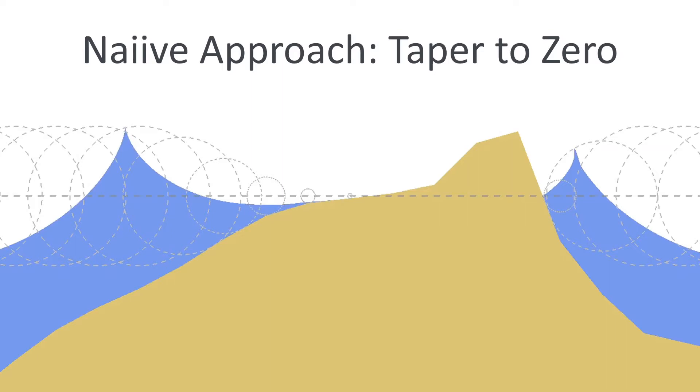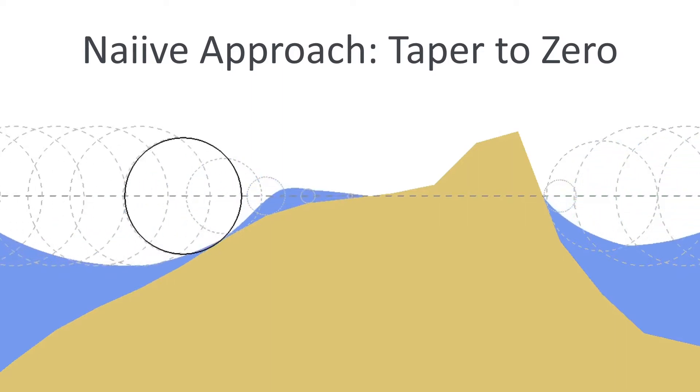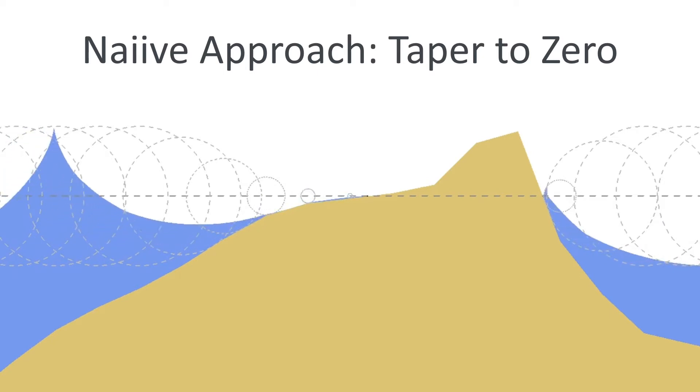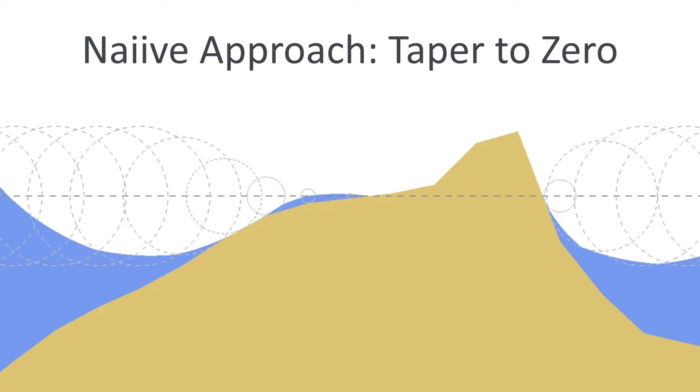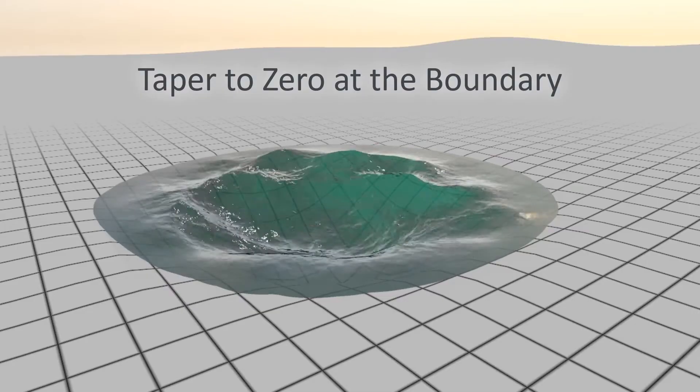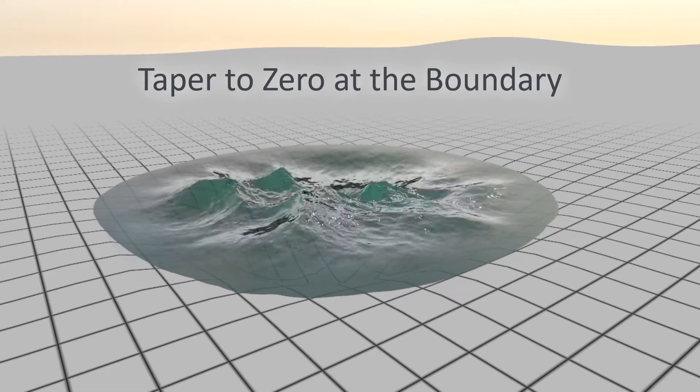As a naive workaround, one could taper water displacement simply to be zero at the water line as is shown here. However, notice how this unrealistically freezes the movement at the waterline.